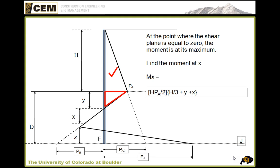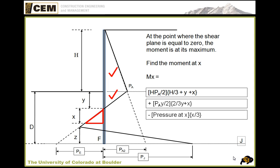Now we know Y, so we don't need to deal with the trapezoidal shape anymore. We know the base and height of that second triangle, which is PA1 and Y. So its force is PA1 times Y over 2, and the moment arm is two-thirds of Y — because the resultant is two-thirds down from the base — plus X. Finally, the third triangle at the base has base equal to the pressure at X, and its moment arm is one-third of X.